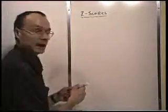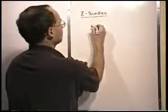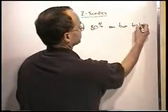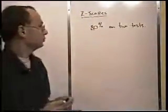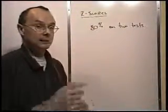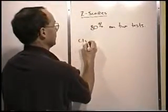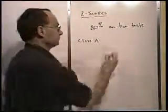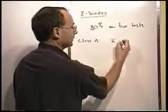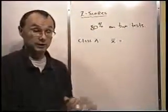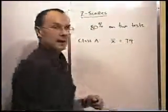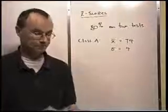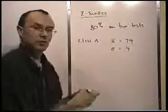Suppose somebody got 80% on two tests. That sounds pretty good — you might be proud of that. But let's say in class A they scored 80%, and we also happen to know that the class average was 74 and the standard deviation was 4 units. That gives us a little more information.